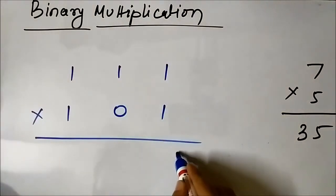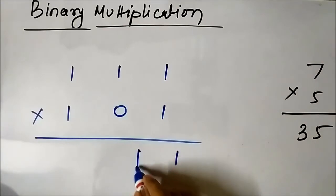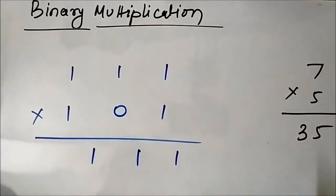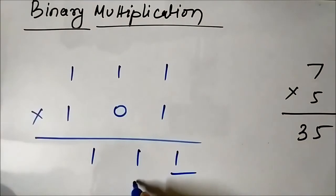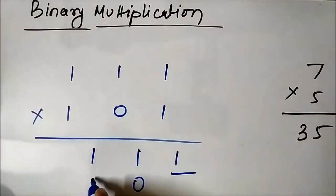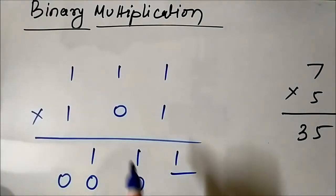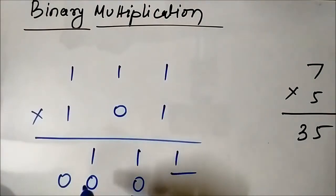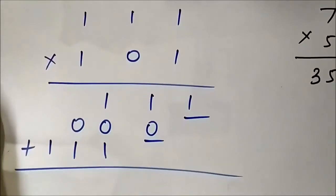For the partial products: 1×111 = 1 1 1 (first row). 0×111 = 0 0 0 (second row, shifted one position). 1×111 = 1 1 1 (third row, shifted two positions). Now we are going to add these partial products.